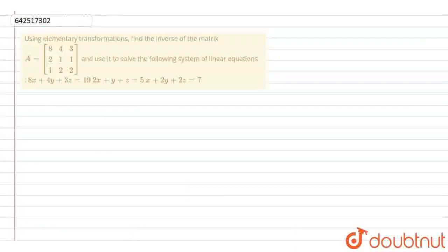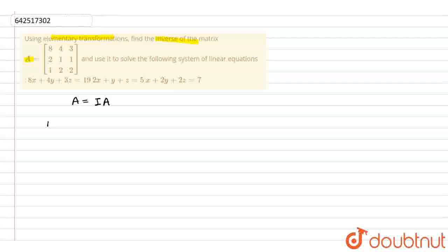In this question, we are given a matrix A and we have to find the inverse of this matrix using the elementary transformation method. So using the elementary transformation method, we have the formula A is equal to IA, where I is the identity matrix.